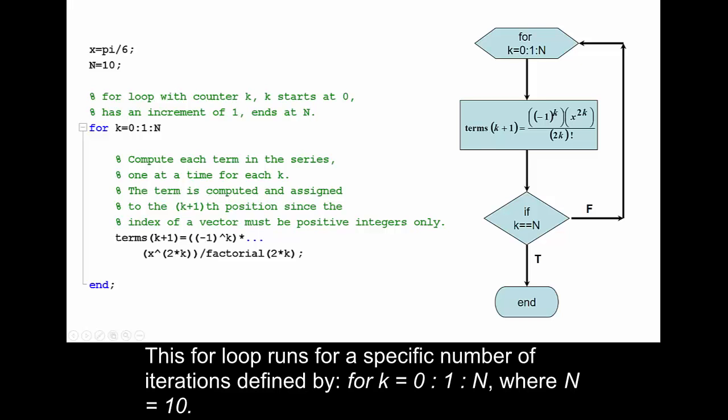This for loop runs for a specific number of iterations defined by for k equals 0 colon 1 colon n, where n equals 10.